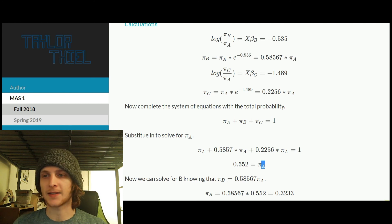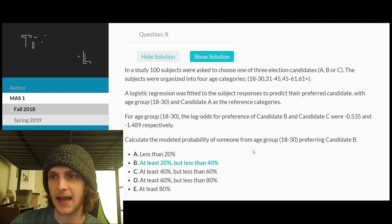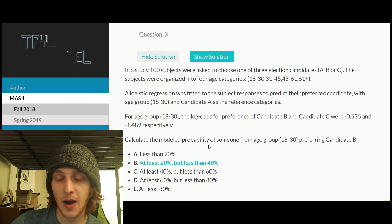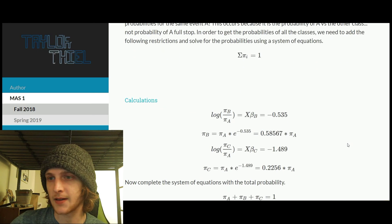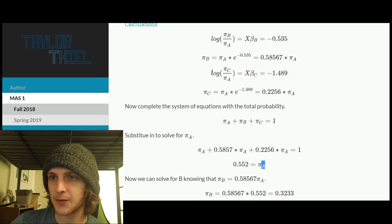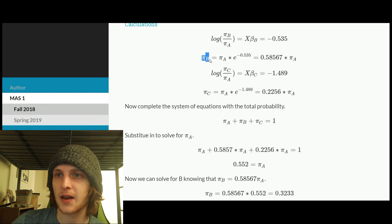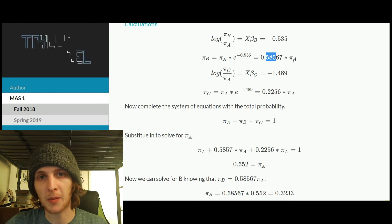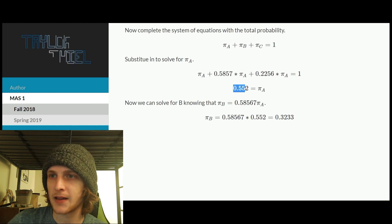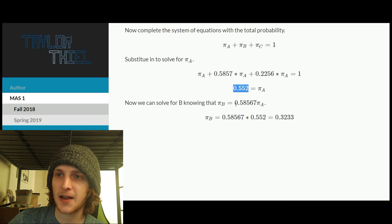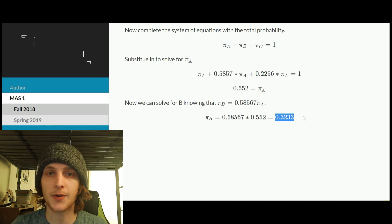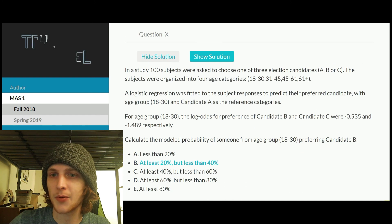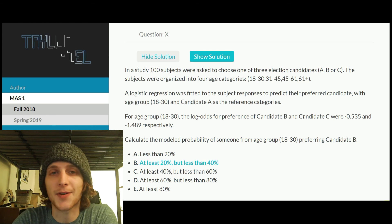Now if we were to go back to the problem, it would say we want to calculate the modeled probability of someone from age group 18 to 30 preferring candidate B. And so all we need to do is refer back to what we solved previously here. So we know that the probability for B is 0.58 of the probability of A. So we just need to multiply our probability of A by that factor. And that's how we get our final solution of 0.3233. And scrolling up, we see that falls in the range of B. So that's our final answer.